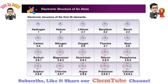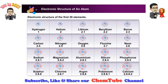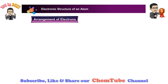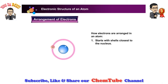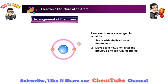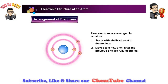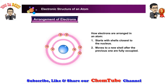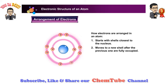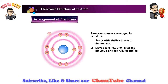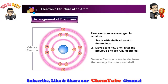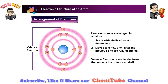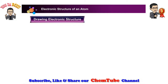Look at how the electrons are arranged. This table shows the atomic structure of the first 20 elements in the periodic table. Let's look at how electrons are arranged in an atom. Electrons will start to occupy the shells closest to the nucleus. Electrons will then occupy a new shell only after the previous one is fully occupied. Electrons occupying the outermost shell are known as valence electrons.